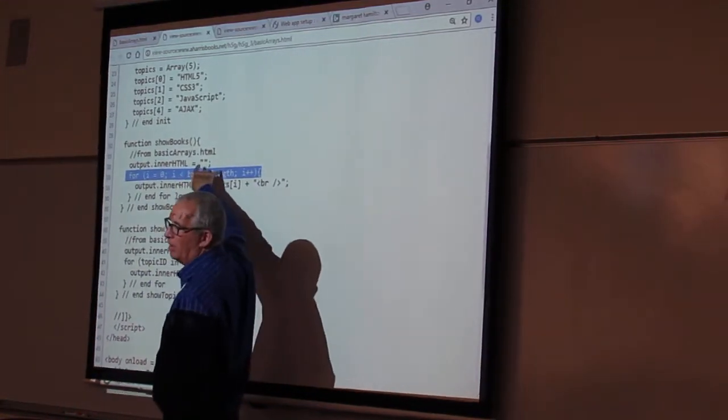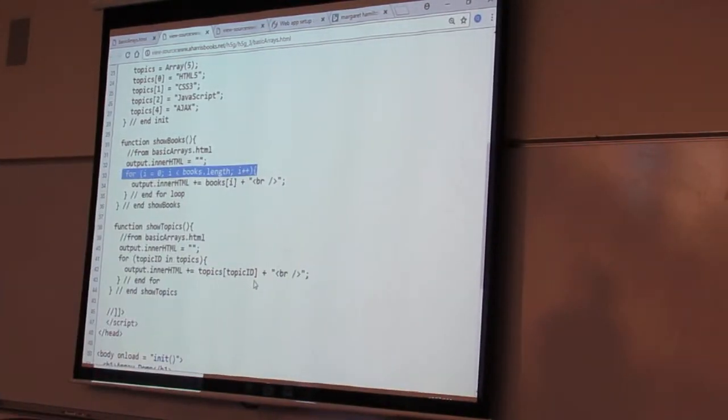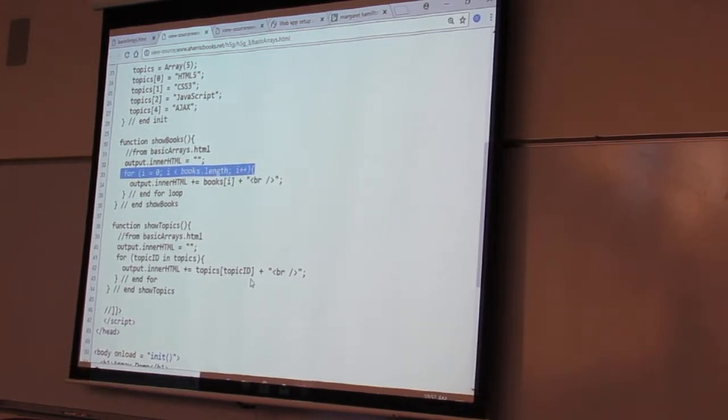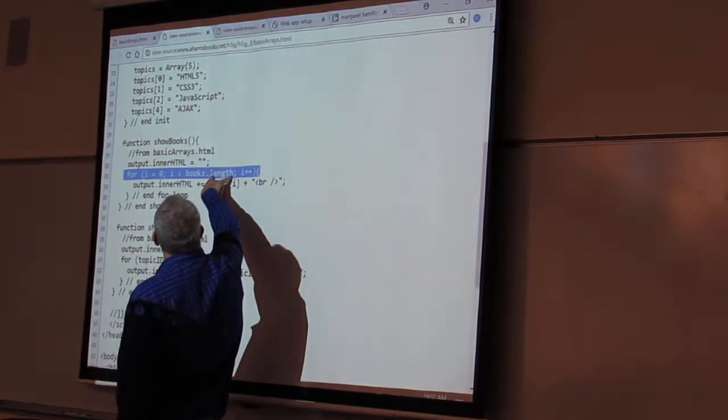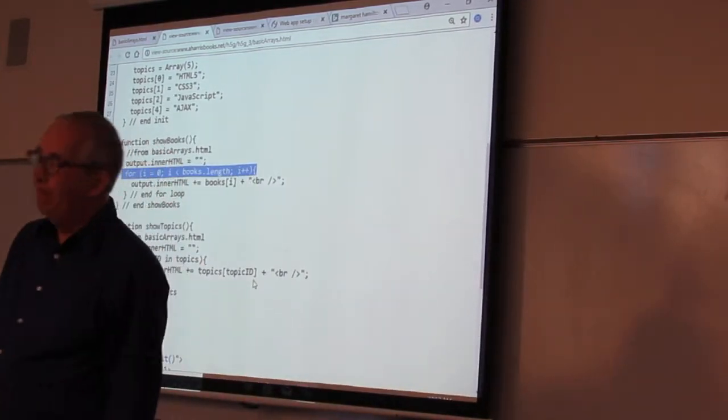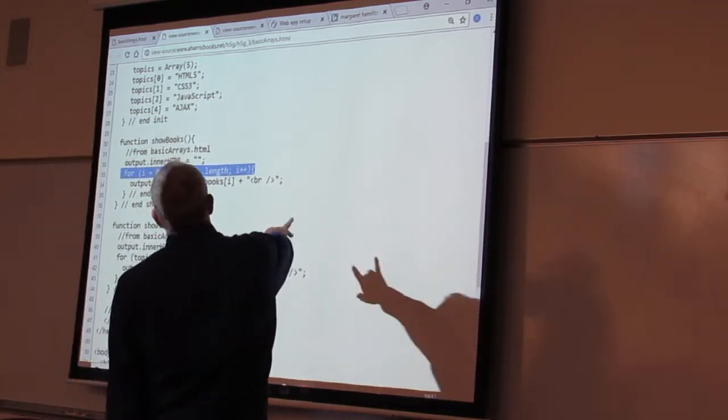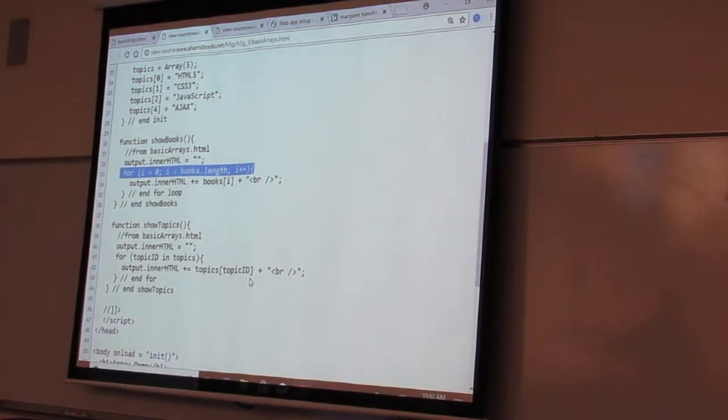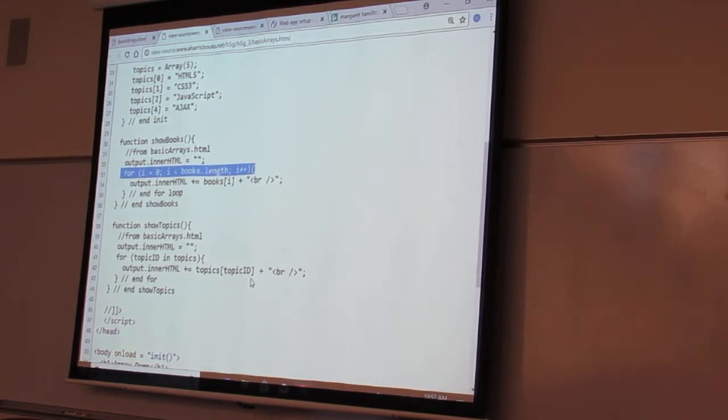Well, books is an array - that's a kind of object - it has a really wonderful length property that tells us how many elements are in it. That's neat. And then i++. So this is a very common idea. In fact, the most common use of a for loop really is to step through an array.